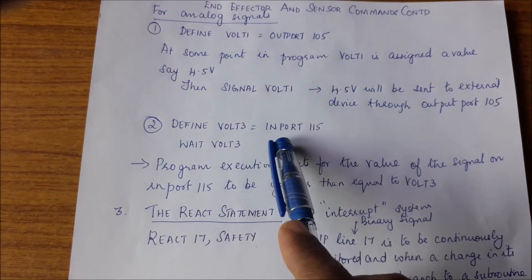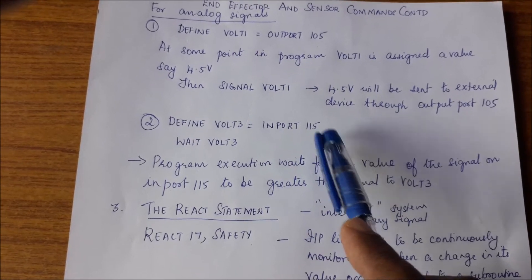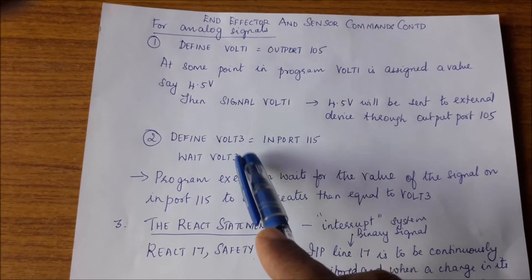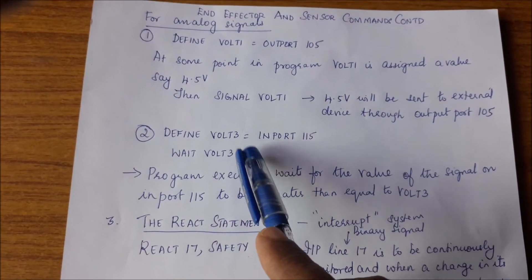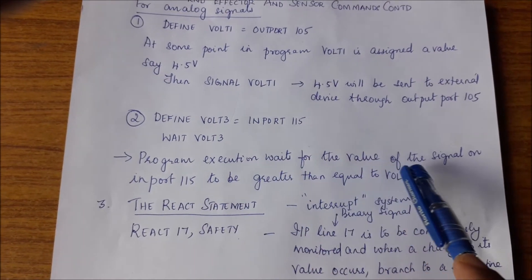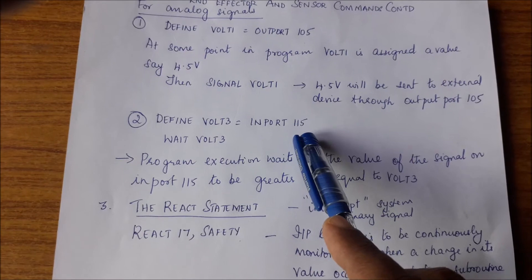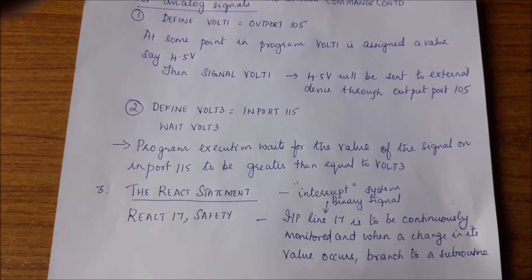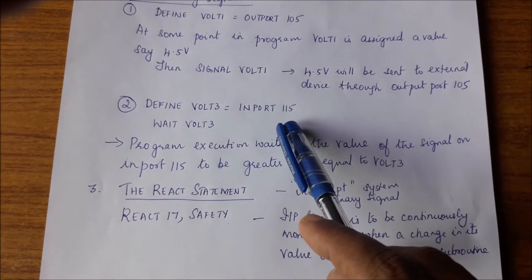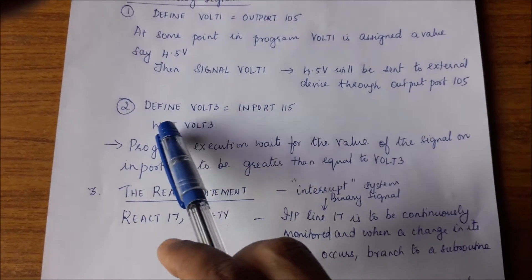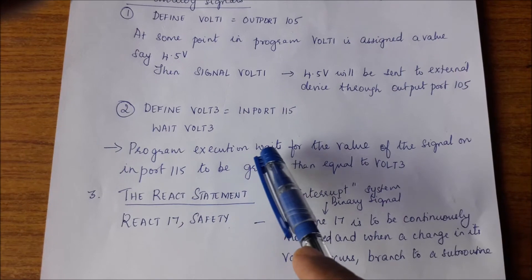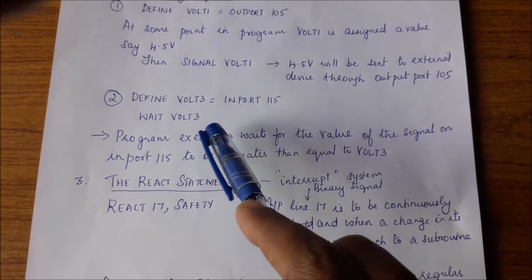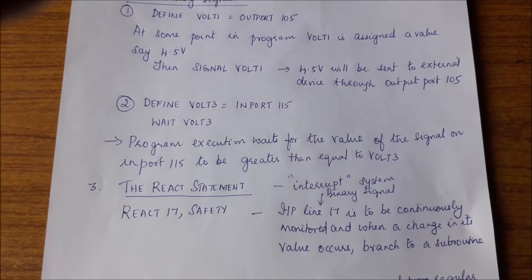Similarly, suppose you have define volt3 as input port 115, and then the command wait volt3. What happens is: wait suspends program execution until the required condition is met. The program execution waits for the value of the signal on input port 115 to be greater than or equal to the value of volt3 that has been computed in the program. Volt3 is the variable associated with input port 115.